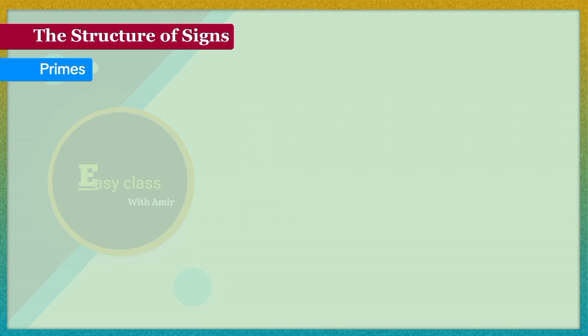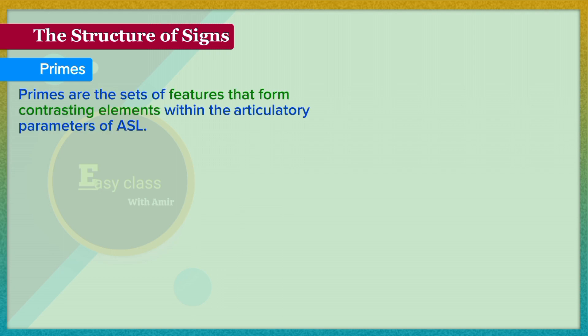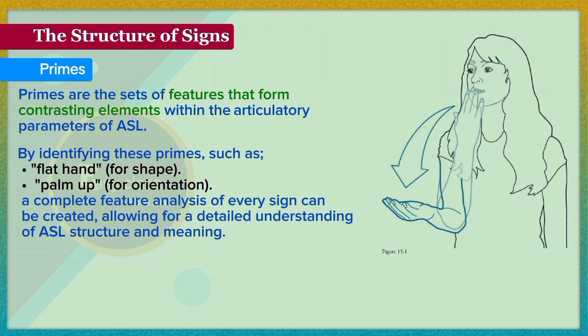Primes are the sets of features that form contrasting elements within the articulatory parameters of ASL. By identifying these primes — such as flat hand for shape and palm up for orientation — a complete feature analysis of every sign can be created, allowing for a detailed understanding of ASL structure and meaning.